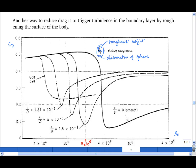And this is happening, of course, because as the surface gets rougher, it triggers turbulence at a lower Reynolds number. But here's a question for you. Why don't ping pong balls have dimples on them?